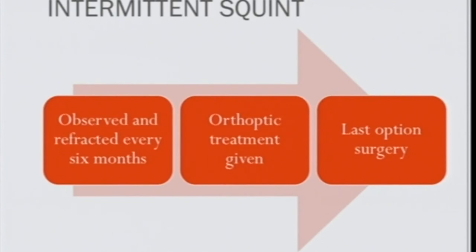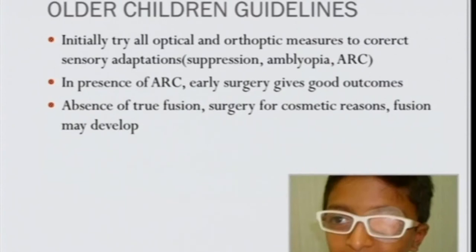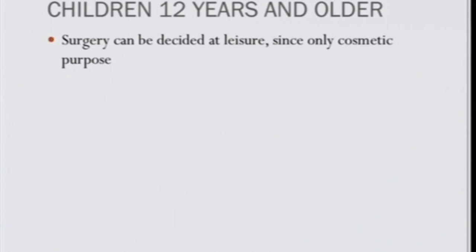In divergent squints, subtypes include divergence excess, basic type, convergence insufficiency, and pseudo-divergence excess — surgery is always the last option. For small-angle intermittent squints in older children, first try all optical and orthoptic measures including prisms or Fresnel prisms. Early surgery gives good outcomes in the presence of normal retinal correspondence, giving crude binocular vision. Extra-macular fusion can also develop. Children 12 years and older can have surgery decided at leisure, mainly for cosmetic reasons.